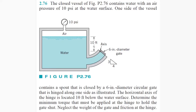Here's another hydrostatic submerged surface problem. The closed vessel contains water with an air pressure of 10 psi at the water surface. One side of the vessel contains a spout that is closed by a 6-inch diameter circular gate that is hinged along one side. The horizontal axis of the hinge is located 10 feet below the water surface. Determine the minimum torque that must be applied at the hinge to hold the gate shut. Neglect the weight of the gate and friction at the hinge.